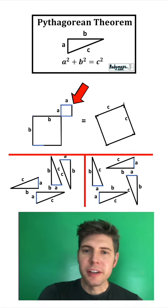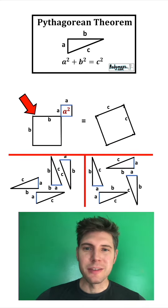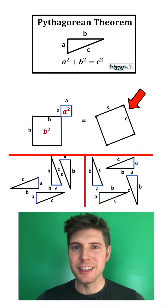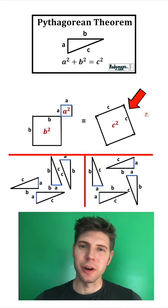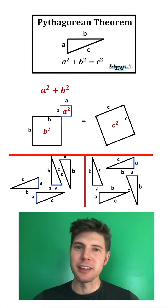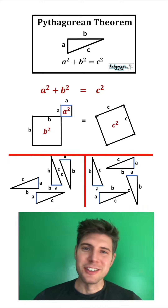This square right here is an A-by-A square, so the area of it is A squared. This square has sides B, so its area is B squared. And this square has sides C, so its area is C squared. We can call this left-hand side A squared plus B squared, because we're adding these two squares together. That's going to be equal to the right-hand side, which is C squared. And that's the end of this demonstration.